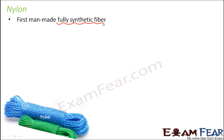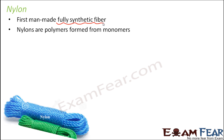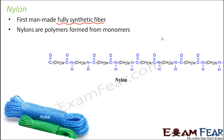Nylon is fully synthetic, meaning it is obtained from substances that are not natural polymers — everything happens artificially. If you look at the structure of nylon, they are polymers made up of many monomer units. Here you can see the structure of nylon. The monomer units in nylon are either acids or amines, or a mixture of diamines and diacids — that is the chemical composition of nylon.